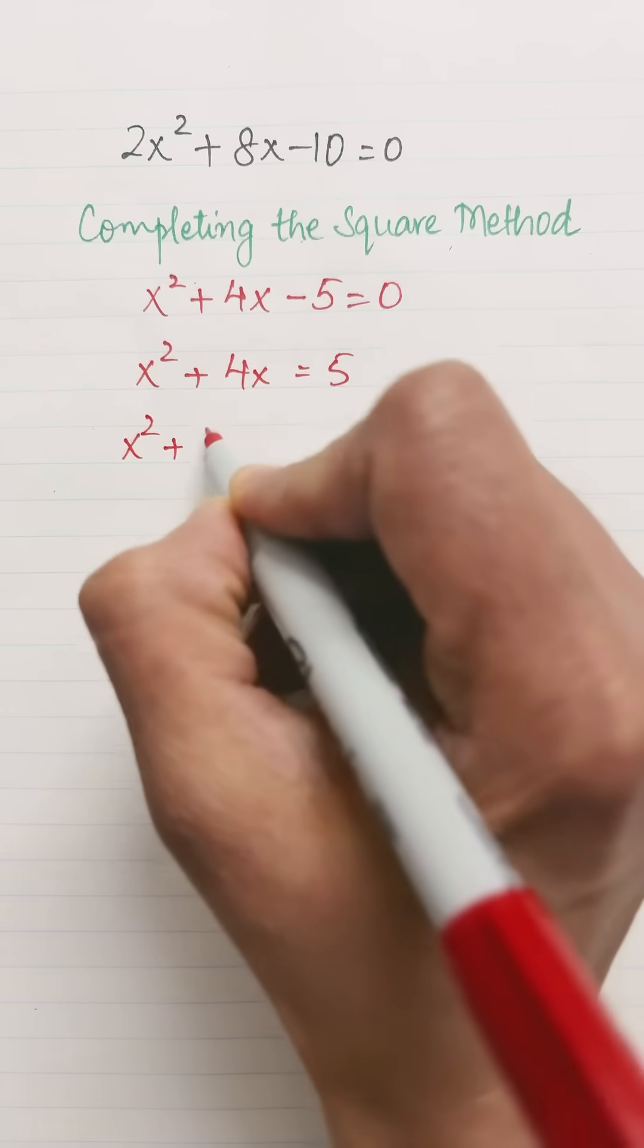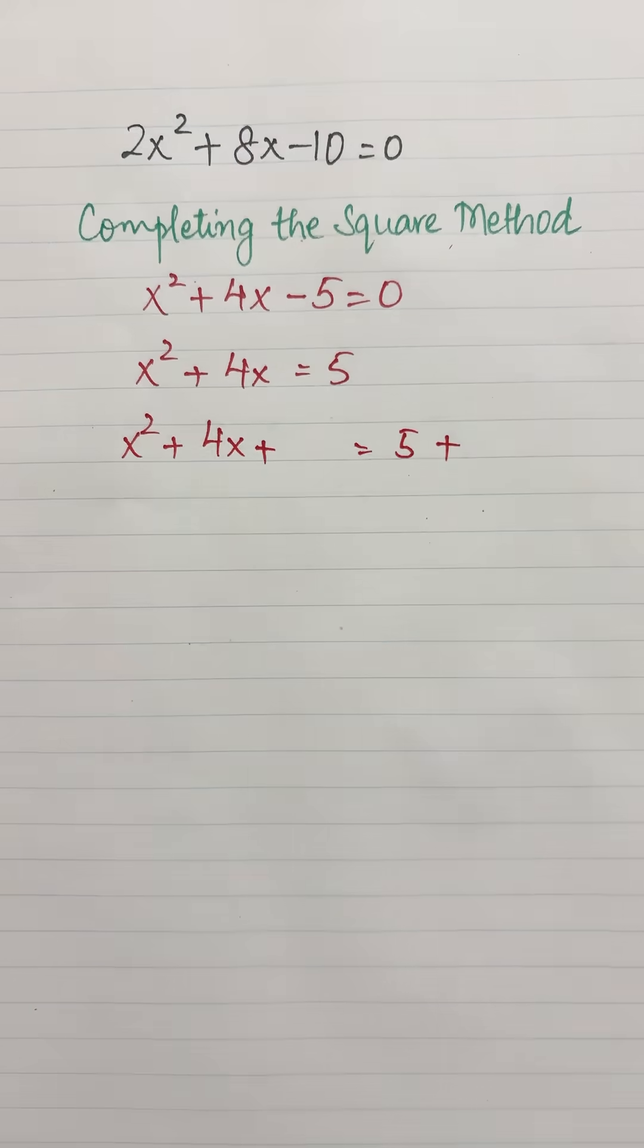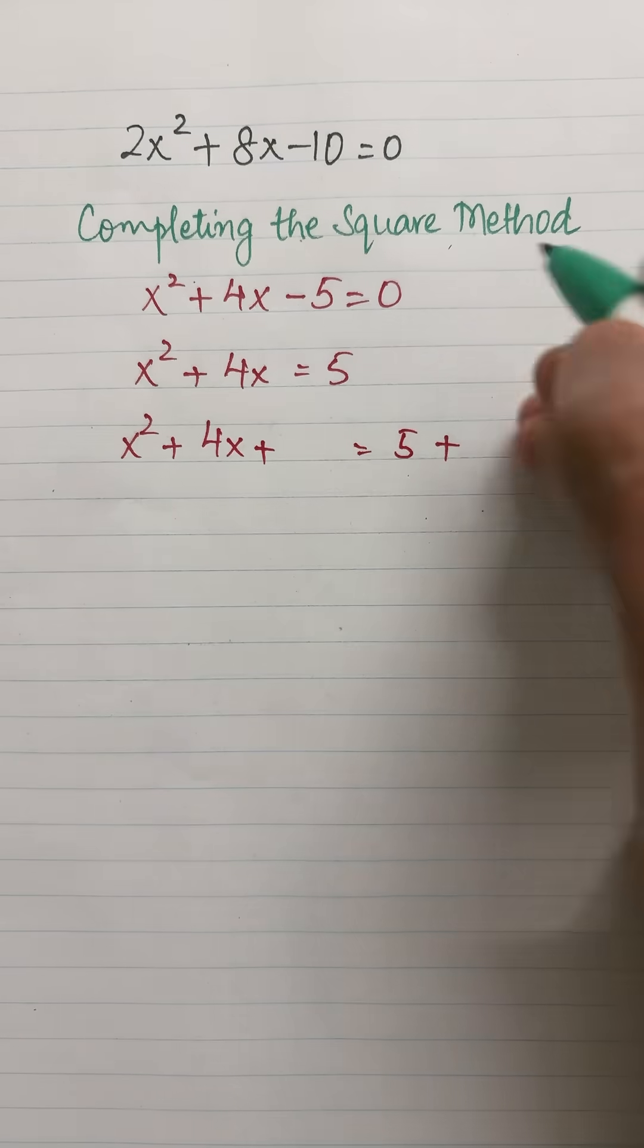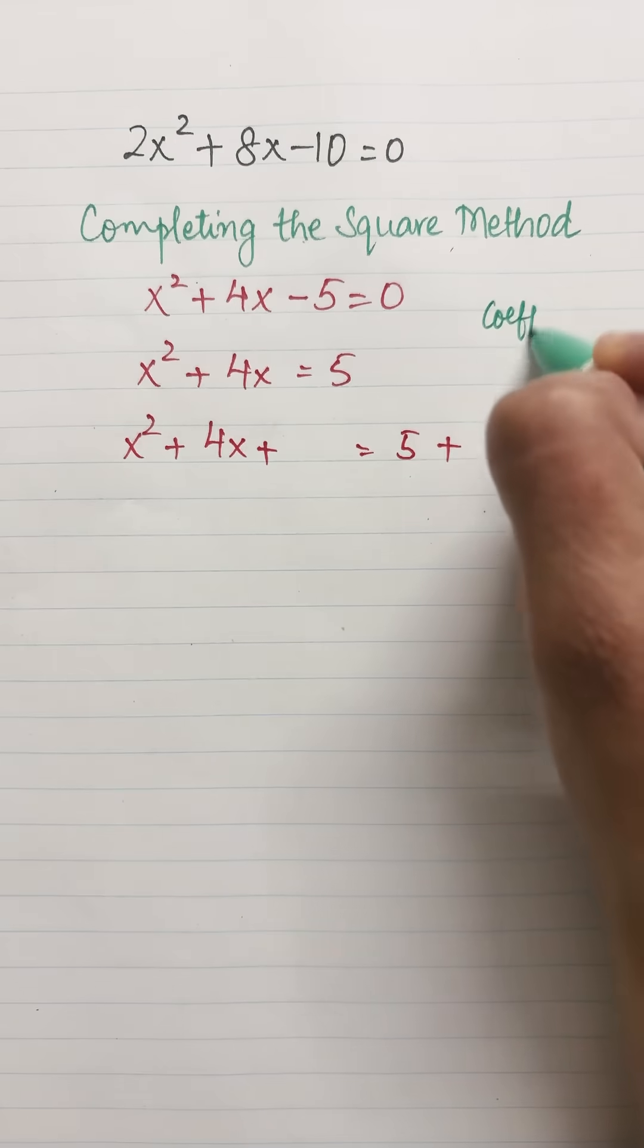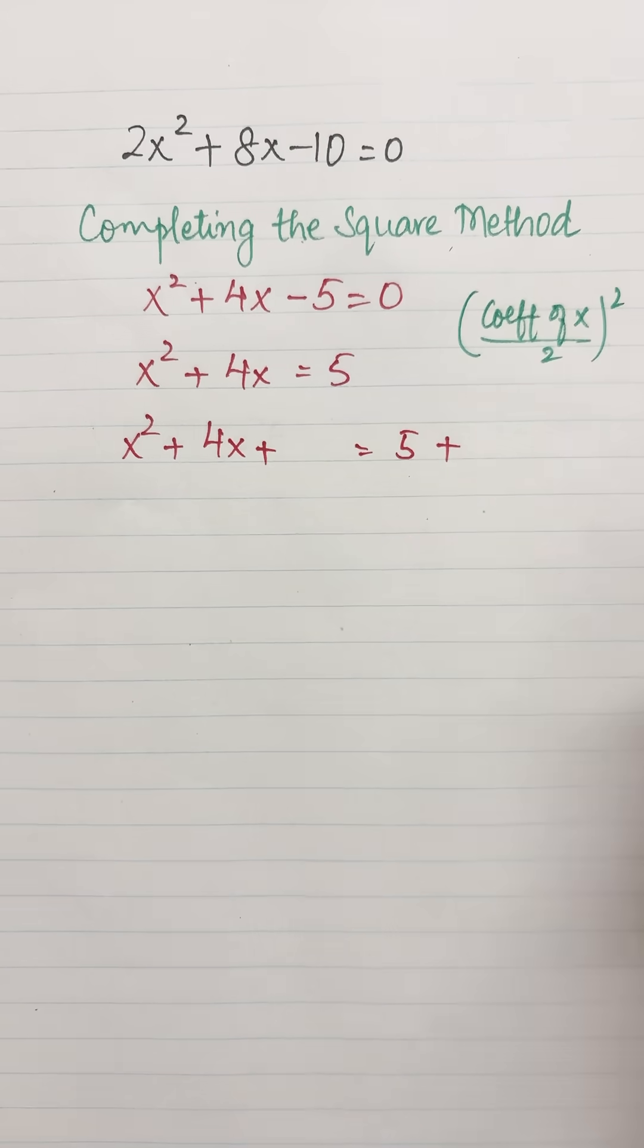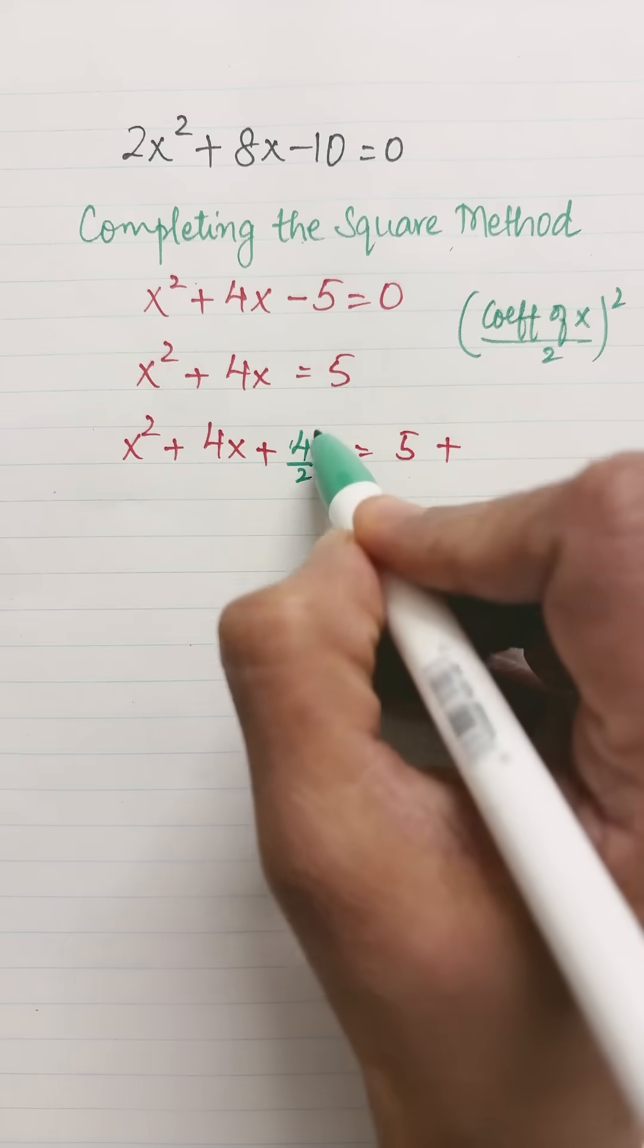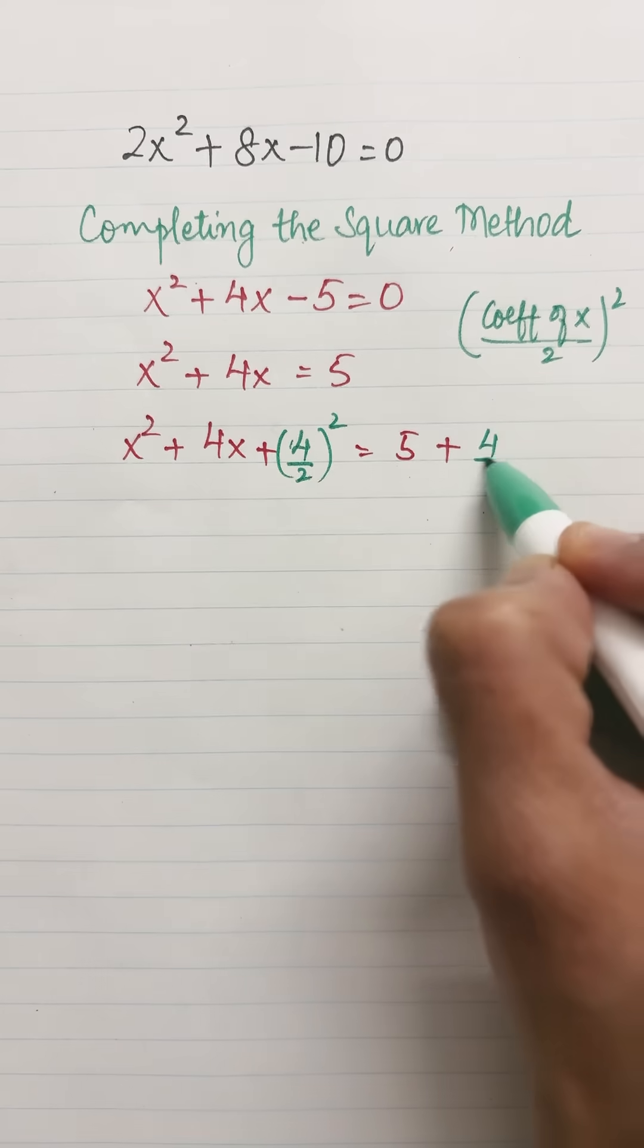Now I need to add a number on both sides of the equation, and what would that number be? Always remember that number is coefficient of x divided by 2, whole squared. Always. So what is the coefficient of x? It's 4. So it's 4 divided by 2, whole squared, on both sides.